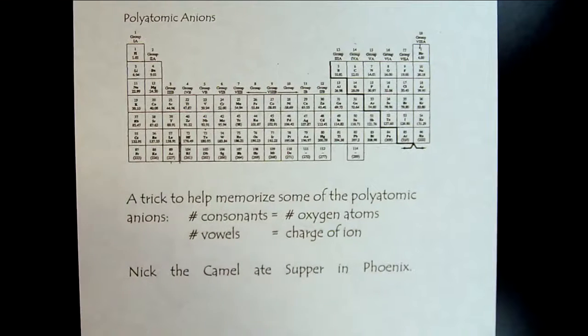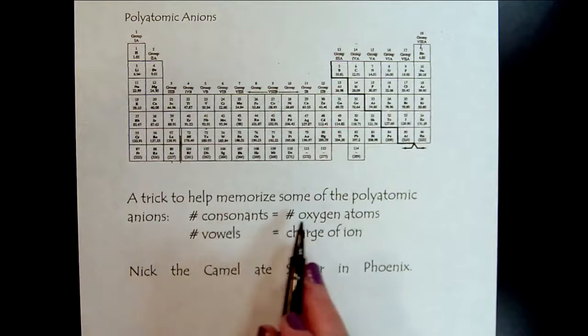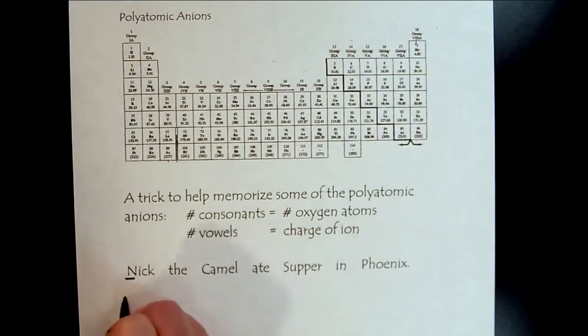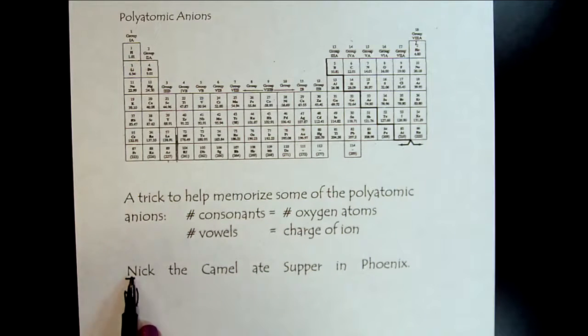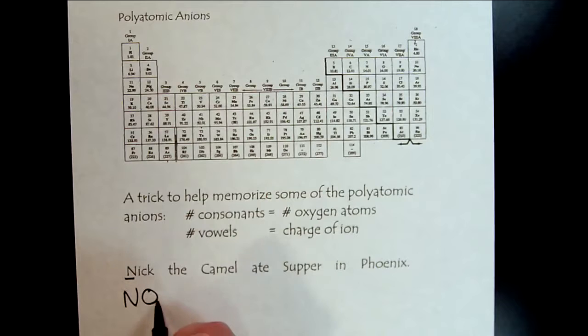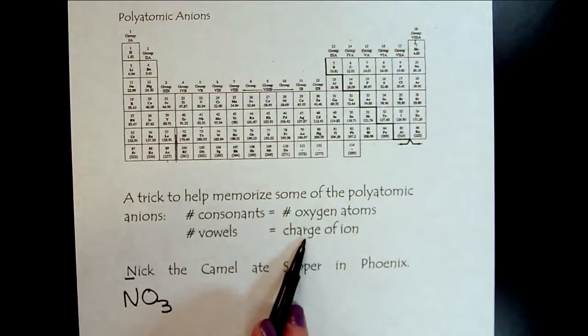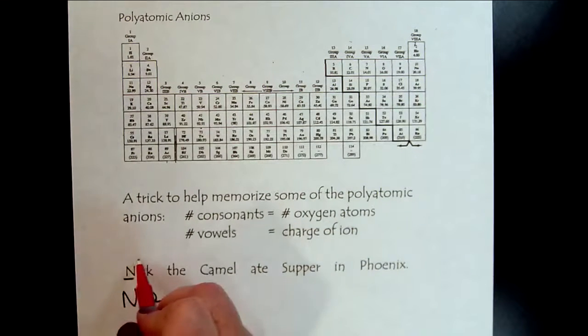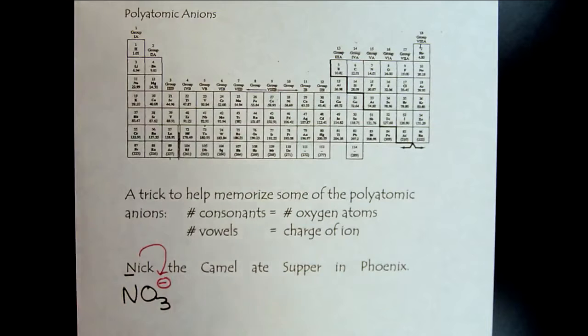And then there's a little trick to help you memorize those base polyatomic anions. So the number of consonants tells us the number of oxygen atoms. So the N tells us this is nitrate. And if we look here, there's one, two, three consonants. So that means there would be three oxygen atoms. And then the number of vowels gives us the charge. So there's one vowel. So that means we would have a minus one charge.